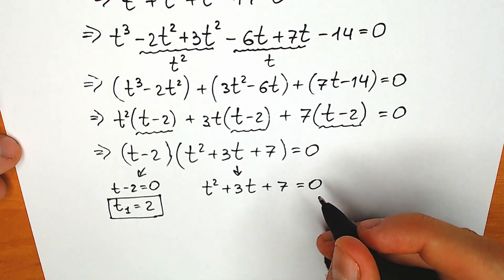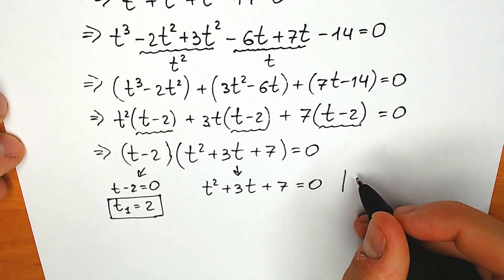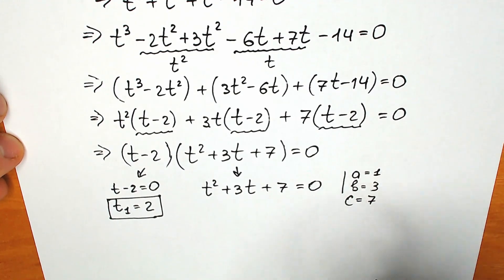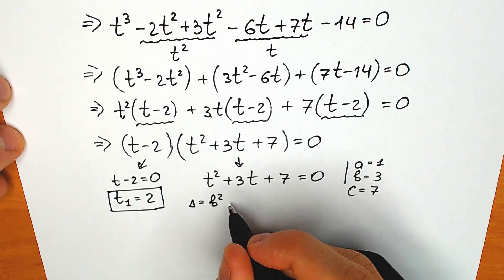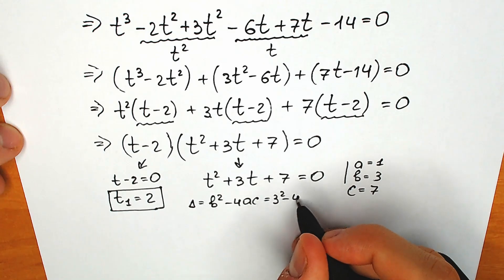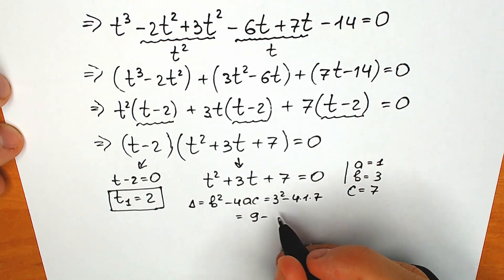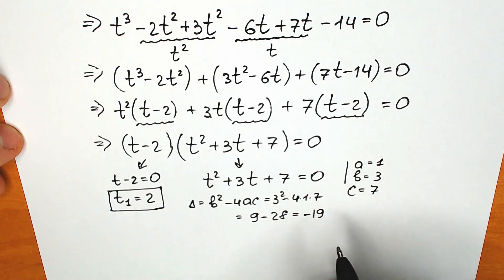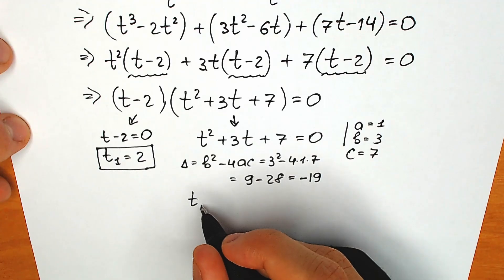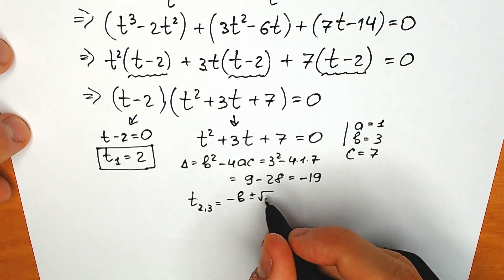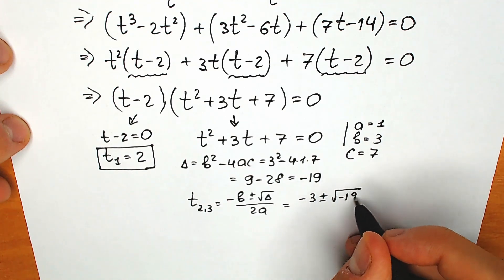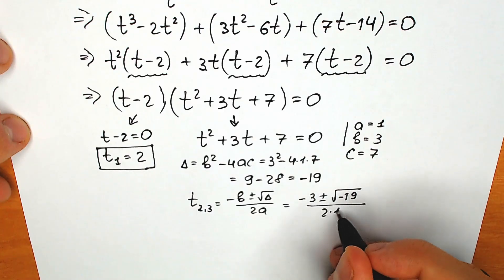Using the standard method with coefficients: a equals 1, b equals 3, c equals 7. The discriminant is b squared minus 4ac equals 9 minus 28 equals minus 19. Since the discriminant is negative, we get two complex roots. Plugging in: t₂,₃ equals (minus b ± √discriminant) / 2a equals (minus 3 ± √(minus 19)) / 2.